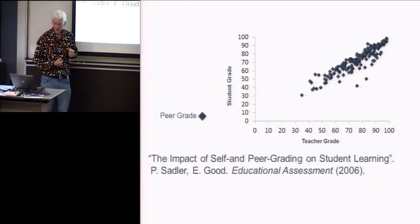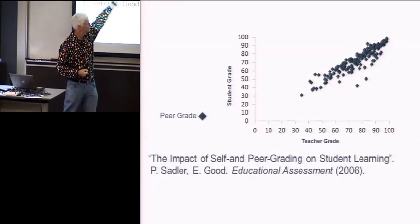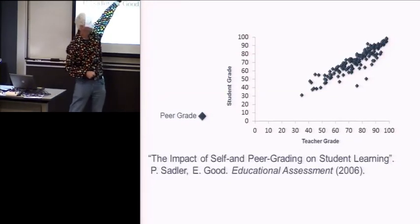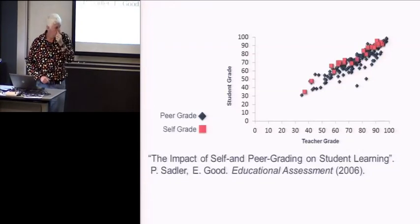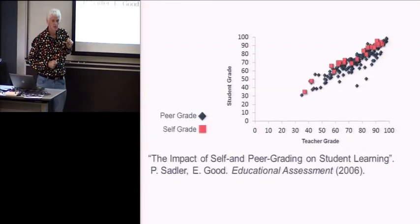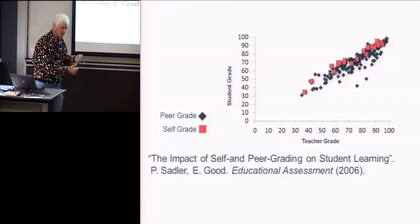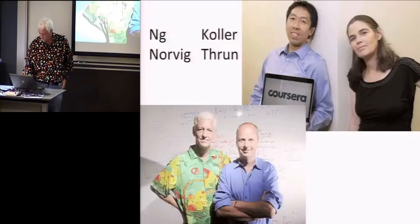So quickly, this is peer grading and this is a correlation of student grades of other students with teacher grades looks pretty good. And in fact, if you did a teacher versus teacher, the spread would be about the same. It turns out self-grading is even more precise, which is surprising to me. People actually know when they're doing a good job. Of course, if you had the self-grading actually count towards their grade, then you'd lose that correlation.